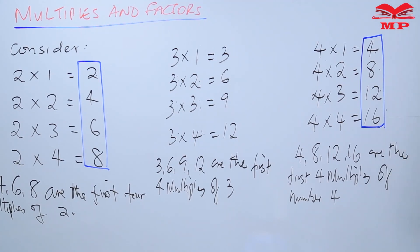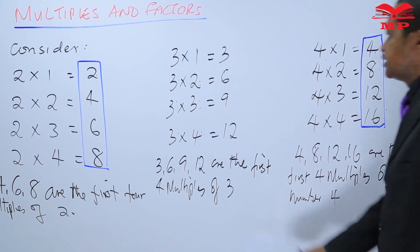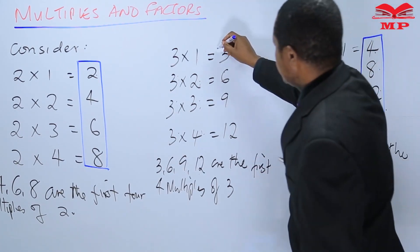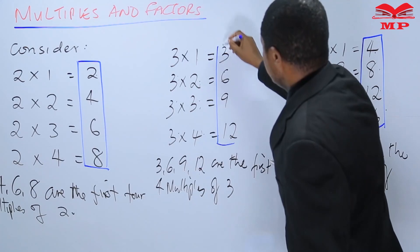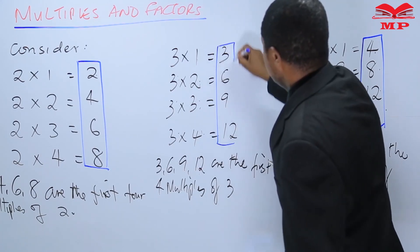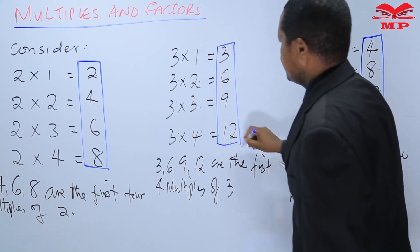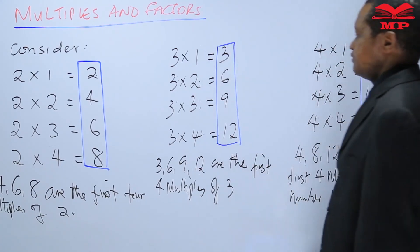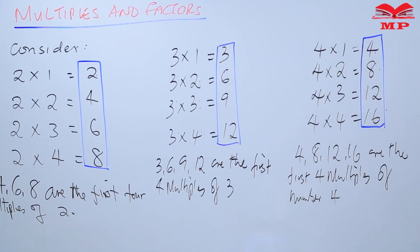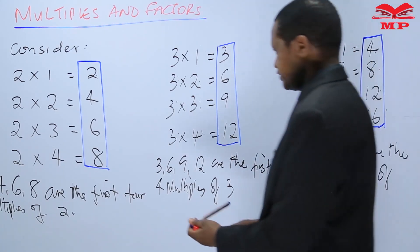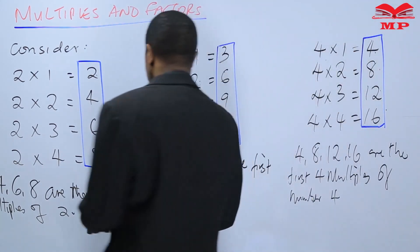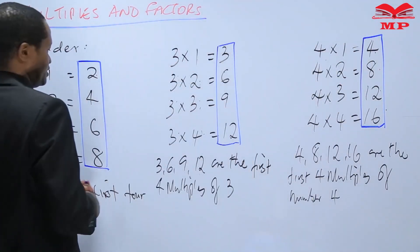Here are the multiples of number four, and here are the multiples of number three — the first four. Learners, do you understand? We have given three cases.